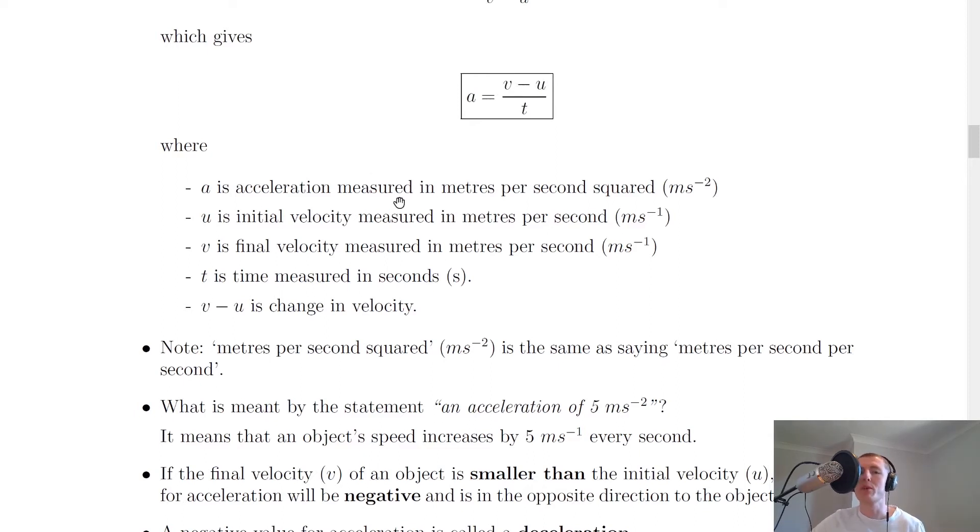And here we have all of our symbols with the units. So a is the acceleration measured in meters per second squared, ms to the minus 2. u is the initial velocity measured in meters per second, and v is final velocity measured in meters per second. t is the time measured in seconds, and lastly, v minus u is the change in velocity.